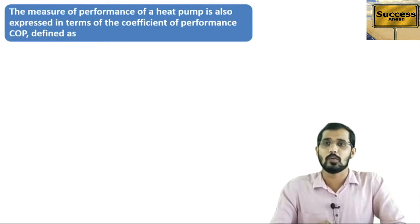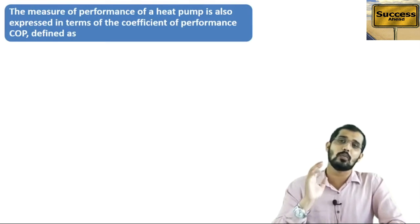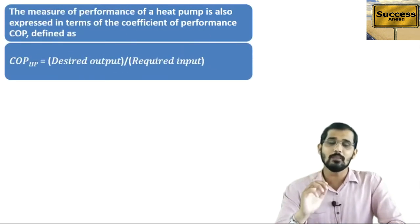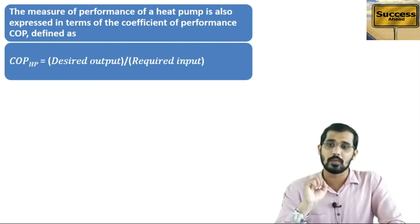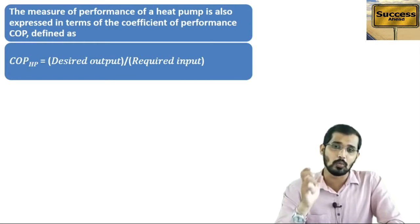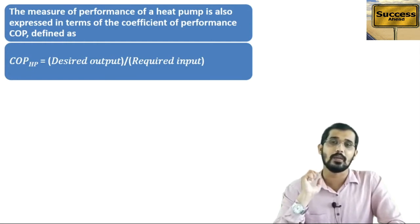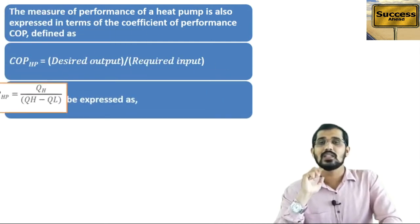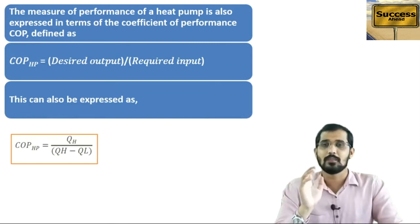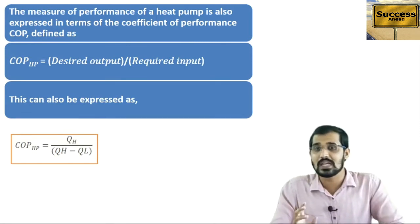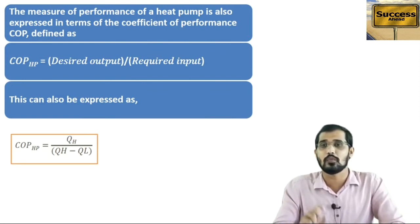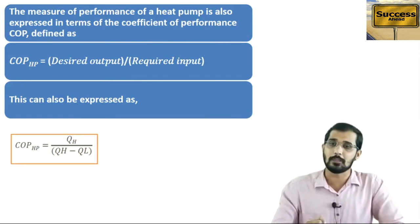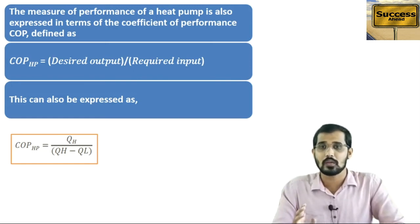Now we will see the coefficient of performance. The coefficient of performance for the heat pump is nothing but desired output divided by required input. This formula, which you have studied in thermodynamics, is QH divided by (QH minus QL). A numerical question based on this formula can be asked in your GATE exam for 1 or 2 marks.